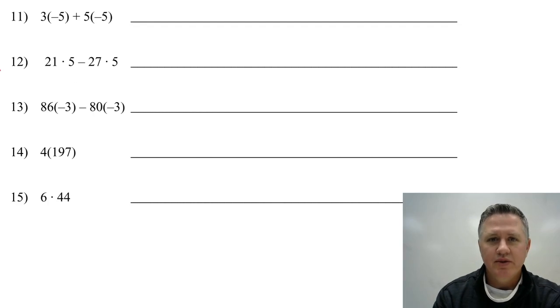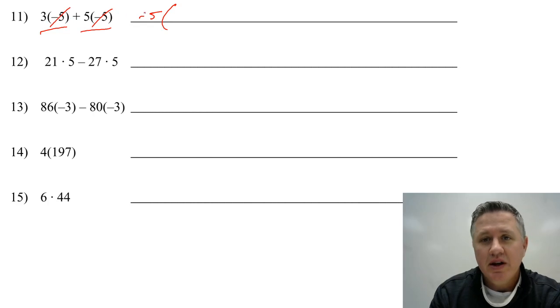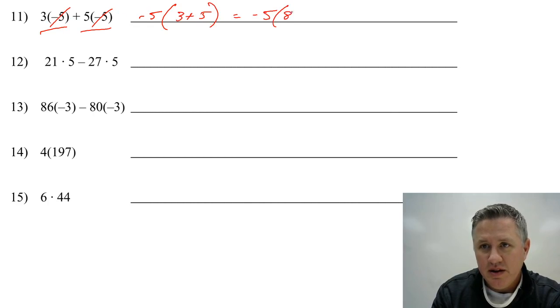Next one. What do these two things have in common? These two parts of the expression. They both have the negative 5, right? So let's pull the negative 5 out. And what do you have left? You have 3 plus 5. Well, 3 plus 5 is 8. And negative 5 times 8 is negative 40.